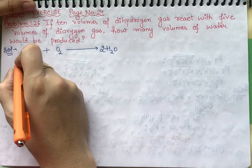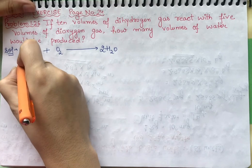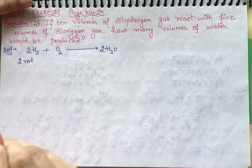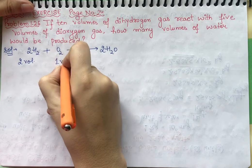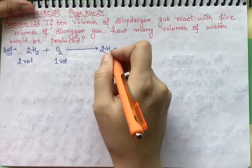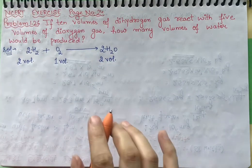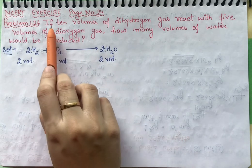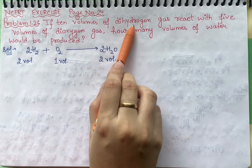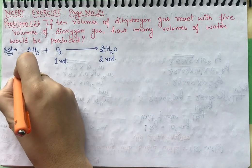What we're saying is that if I see, two volumes of hydrogen with one volume of oxygen react to form two volumes of water. Now what we're saying is that if 10 volumes of dihydrogen, which means we take 10 volumes...